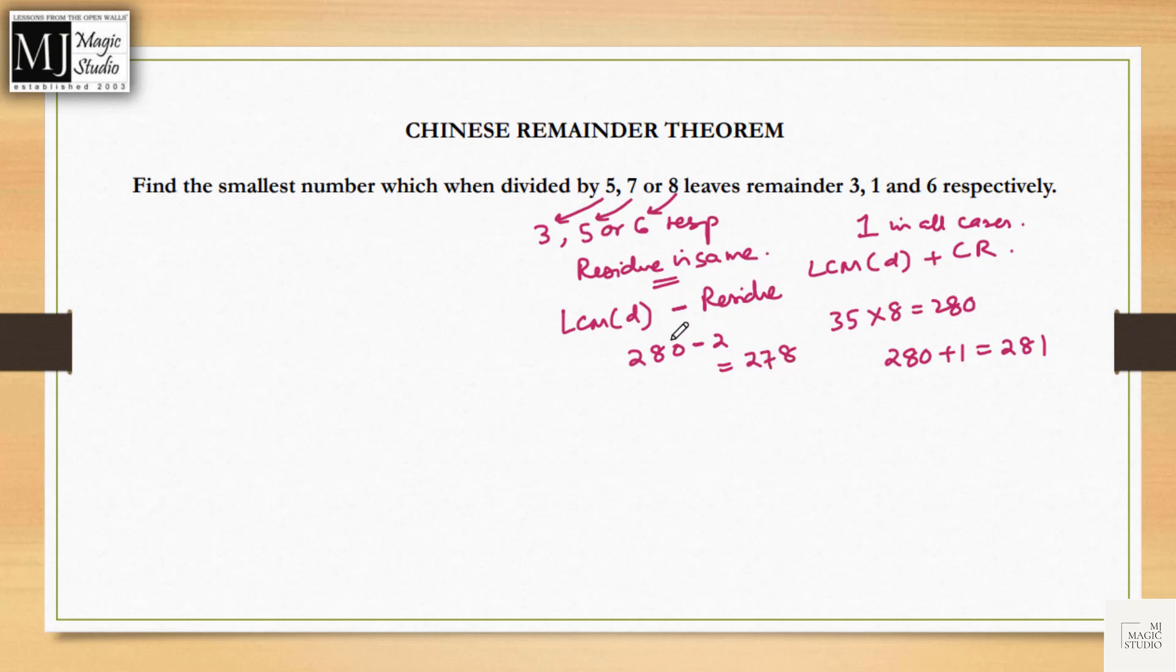But here the question is different. When the number is divided by 5, 7 or 8 it leaves remainder 3, 1 and 6 respectively. Here remainders are not same, that means we can't use this format. Here 5 minus 3 is 2, 7 minus 1 is 6, 8 minus 6 is 2. That means residue is also not same. In this kind of question we use Chinese Remainder Theorem, and it is a process to learn. We will try to explain this process step by step.